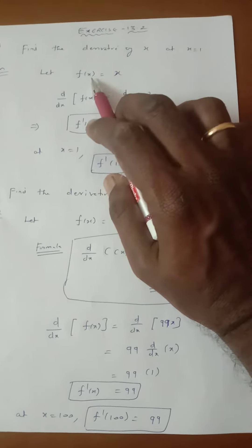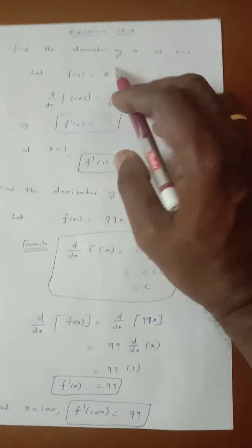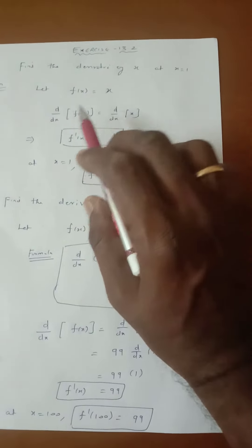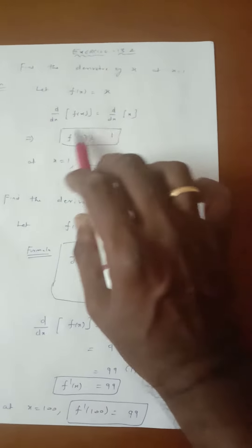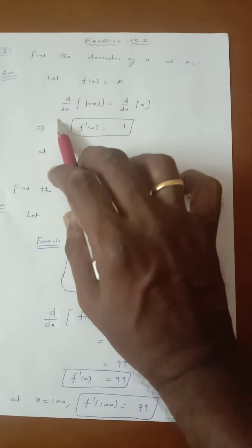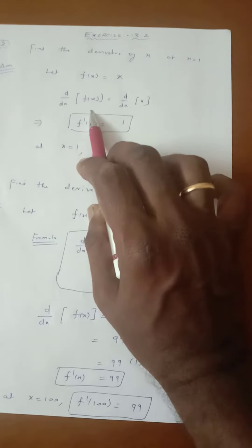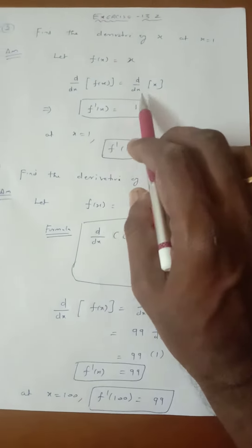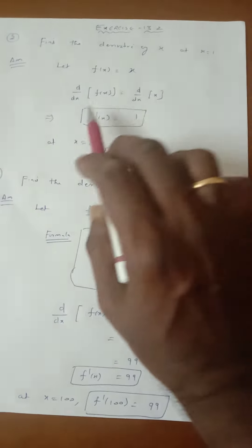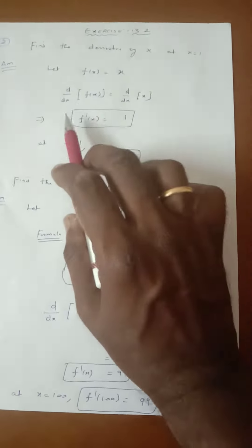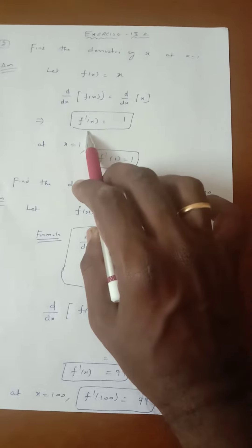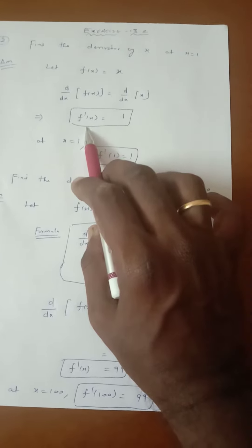f of x is a function which is equal to x. Differentiating on both sides with respect to x: d by dx of f of x equal to d by dx of x. Differentiating on both sides, d by dx of f of x can be taken as the first derivative, which is f dash of x.